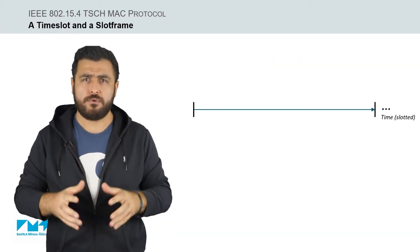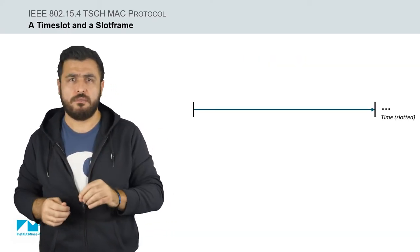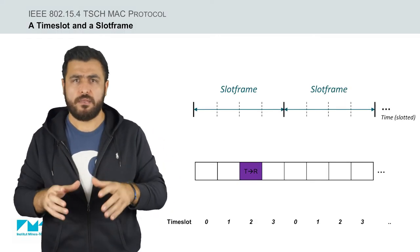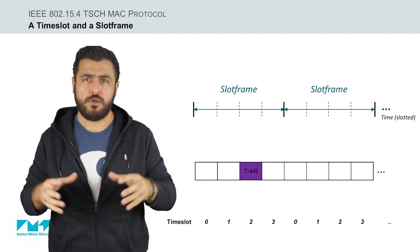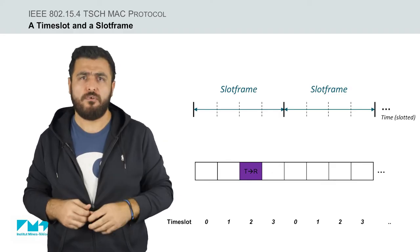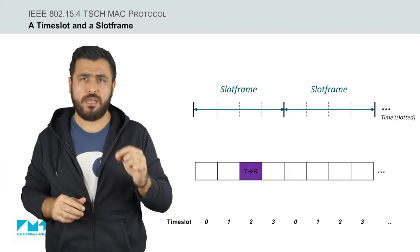In a TSCH network, the continuous time is divided into time slots of equal length. Then a set of time slots are grouped into a slot frame structure that repeats in time for the whole duration of the network lifetime.